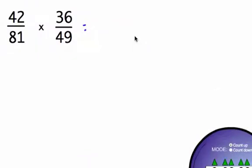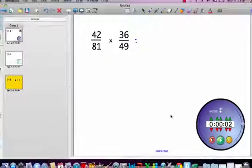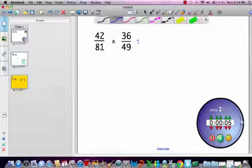The second way I'm going to show you might be a little bit easier, and I'll show you why. These are big numbers here. I'm going to time how long it takes me to do this problem. The first thing I'll do is multiply the numerator times the numerator.